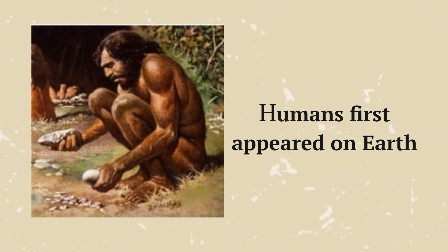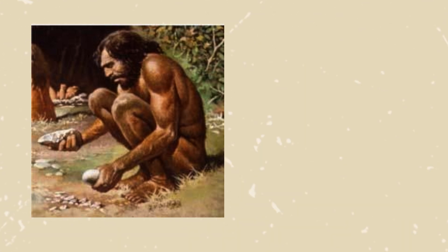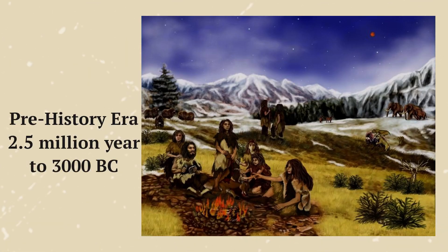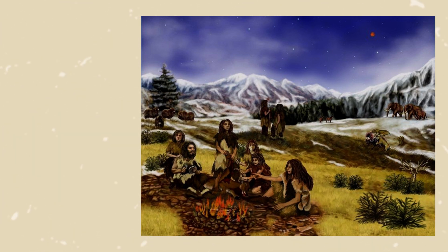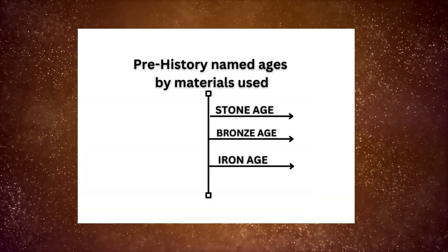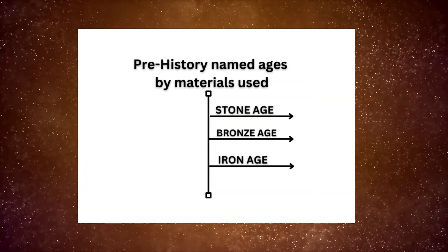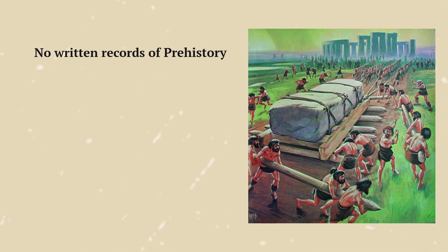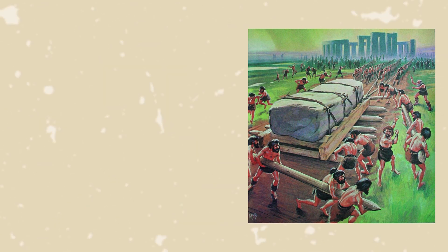It's when our earliest ancestors used stones as tools to survive. This period goes way back, about 2.5 million years ago to 3,000 BC or BCE. Contrasting times in prehistory are named after the kinds of materials people used, like the Stone Age, Bronze Age, and Iron Age. People lived during this time, but there were no written records of what they did. We call this time prehistory because it happened before history was written down.